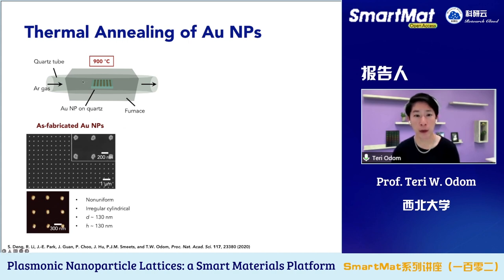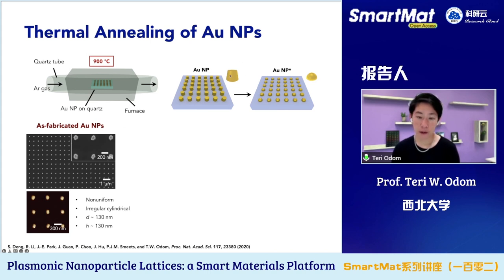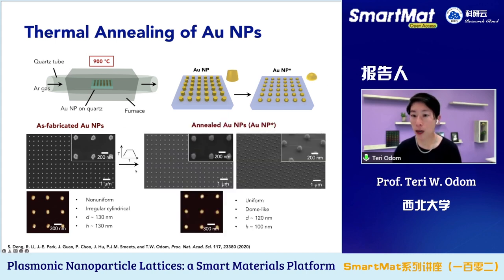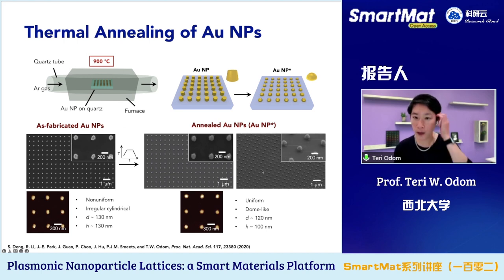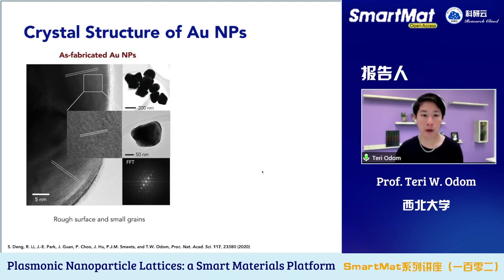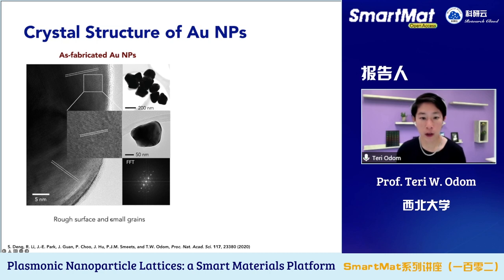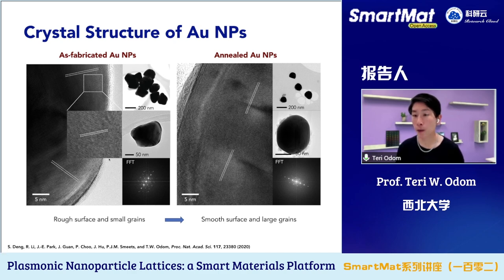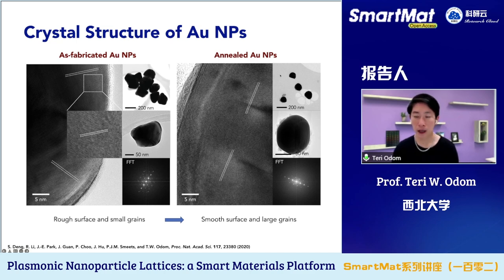Our approach was to carry out thermal annealing. The idea was to have these cylindrical-like shaped particles become hemispheres or rounded particles. We carried this out with a temperature-time response. Comparing atomic force microscope images or SEMs shows that after annealing they're very uniform over the entire area. Comparing crystal structure based on transmission electron micrographs: as-fabricated gold nanoparticles have small grains and rough surfaces, but in the annealed particles there are large regions of nearly single-crystalline material, smooth surfaces, and a beautiful hemispherical shape.